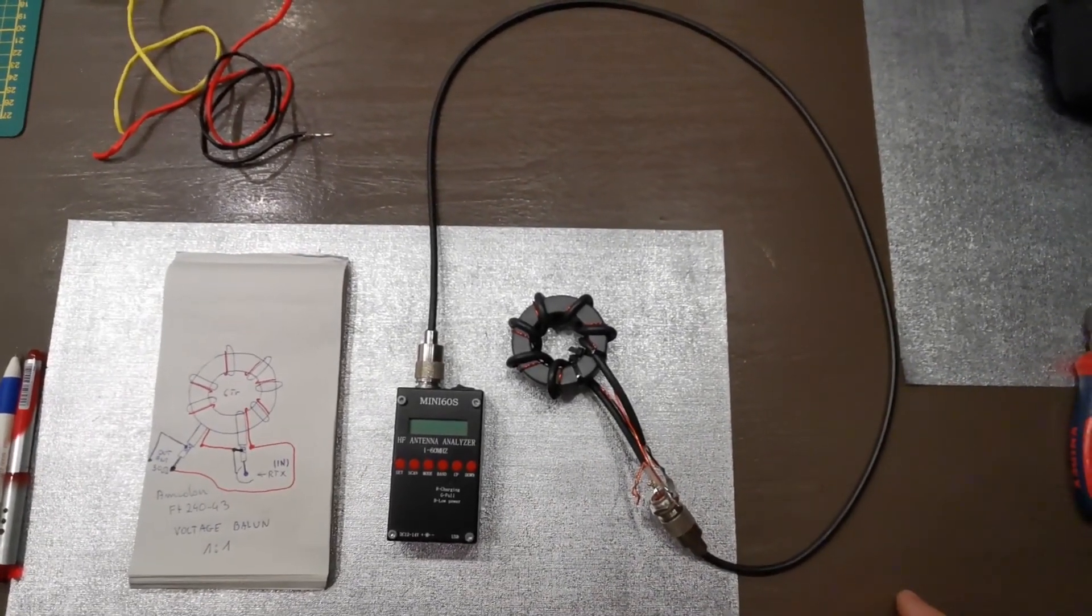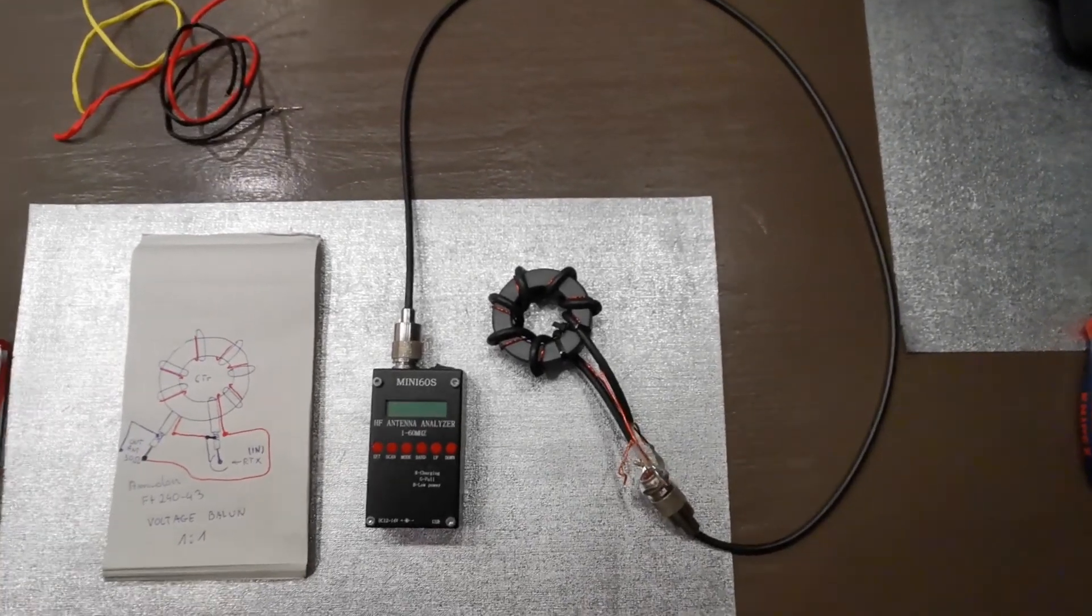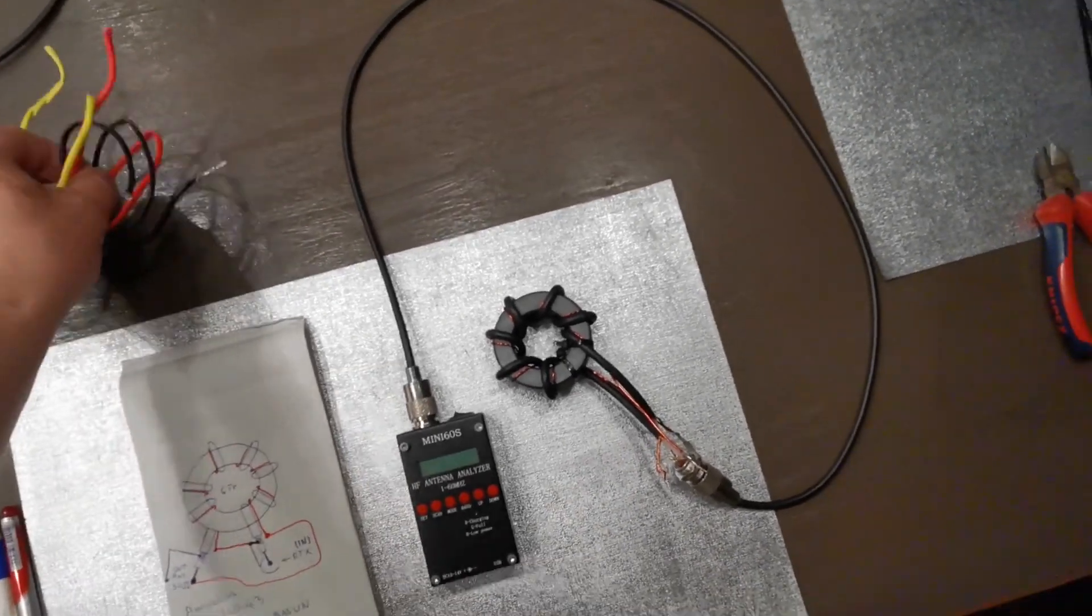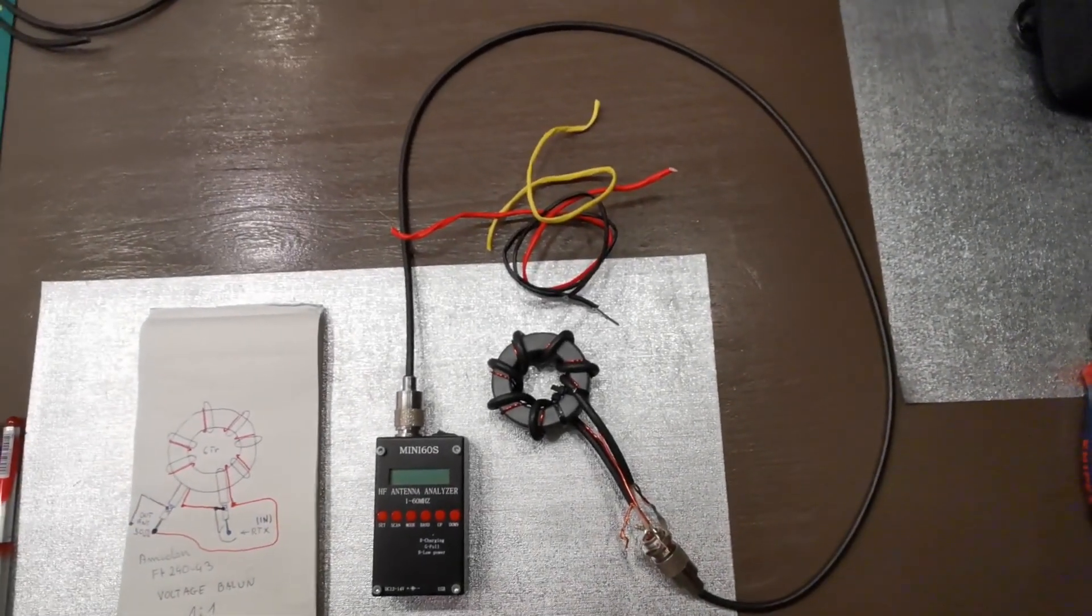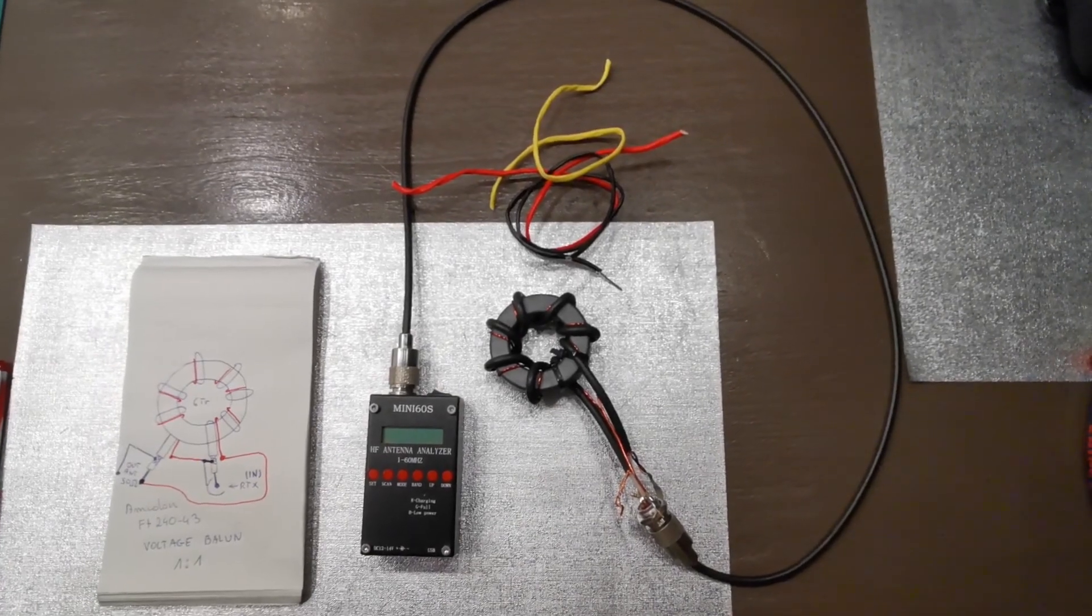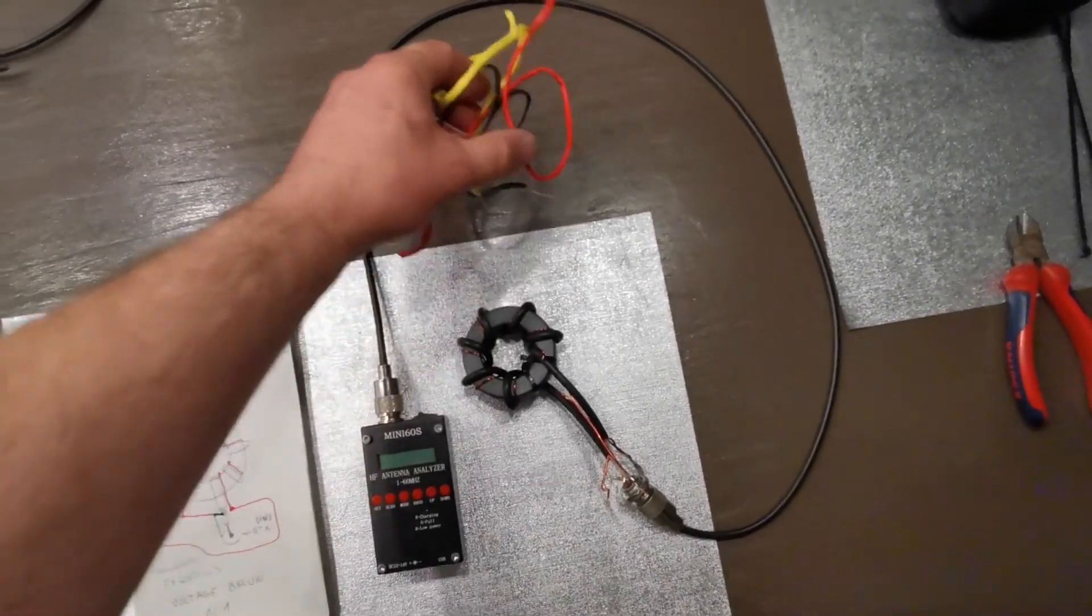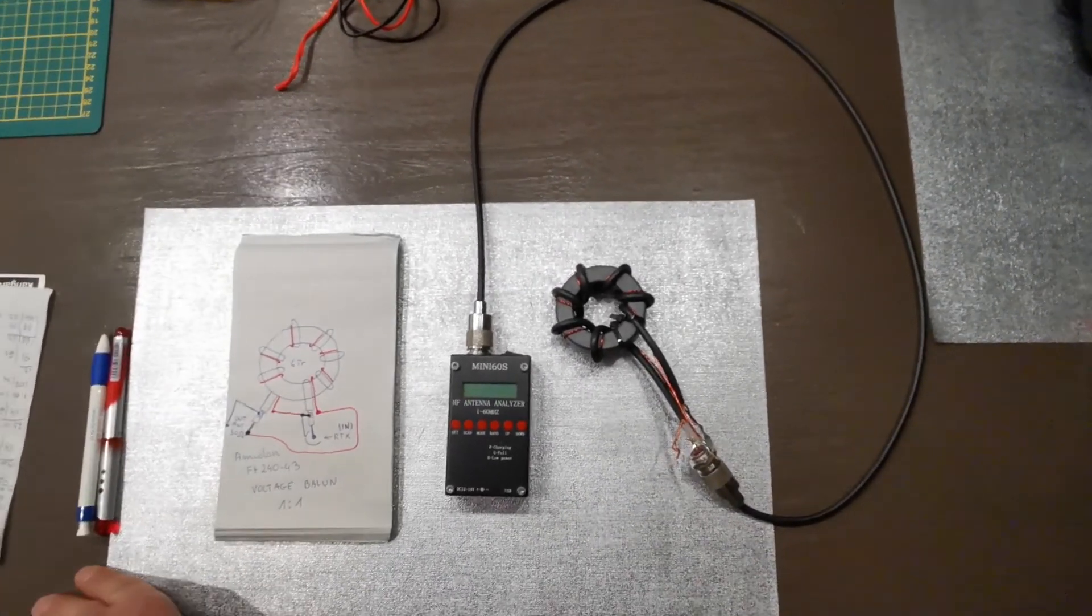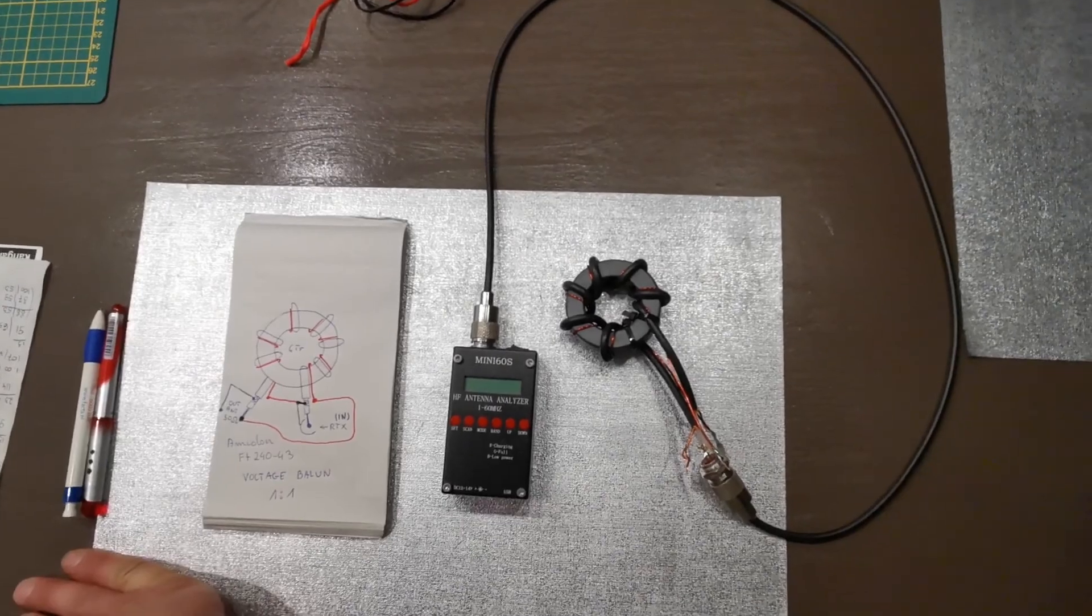This is my second balun, 1:1. The first one I made with three wires in parallel and I couldn't get the 50 ohm impedance. So I found an idea from someone that it's easier to make with coax cable.